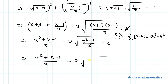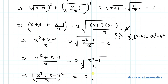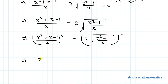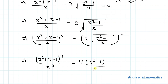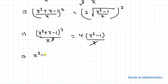In order to remove this radical, we will square both sides of the equation again. Squaring both sides gives us [(x²+x−1)/x]² equals 4·(x²−1)/x. Expanding and simplifying — the x terms cancel — we get (x²−1+x)² equals 4x(x²−1).